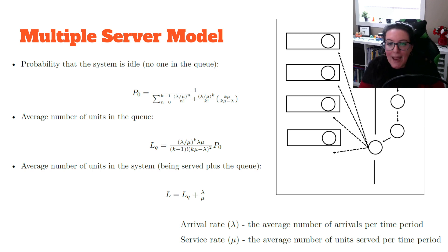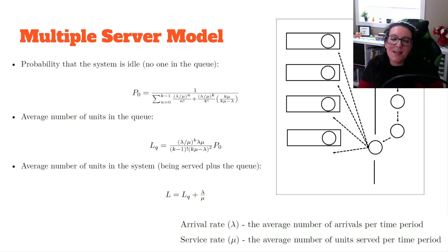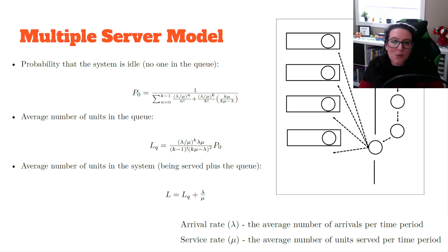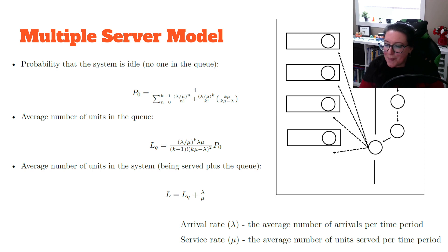All of these metrics are a function of lambda, mu, and k. Lambda is the arrival rate — the average number of arrivals per time period, so how many people show up per minute. Mu is the service rate — the average number of units that can be served in that time period. And k is the number of servers, such as how many cashiers are being staffed.